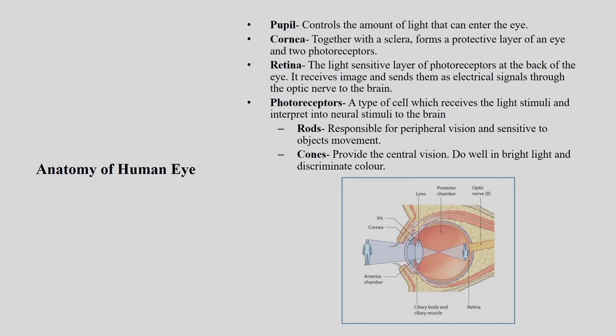Second is the cornea — together with the sclera it forms a protective layer of the eye. Third is the retina — the light-sensitive layer of photoreceptors at the back of the eye. It receives images, forms them, and sends them as electrical signals through the optic nerve to the brain. The fourth is photoreceptors — we have two types: rod cells responsible for peripheral vision and sensitive to movement, and cone cells which provide central vision, do well in bright light, and discriminate light.